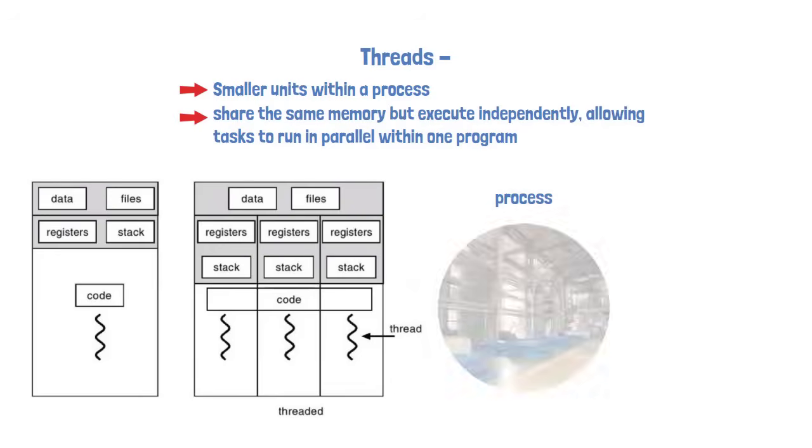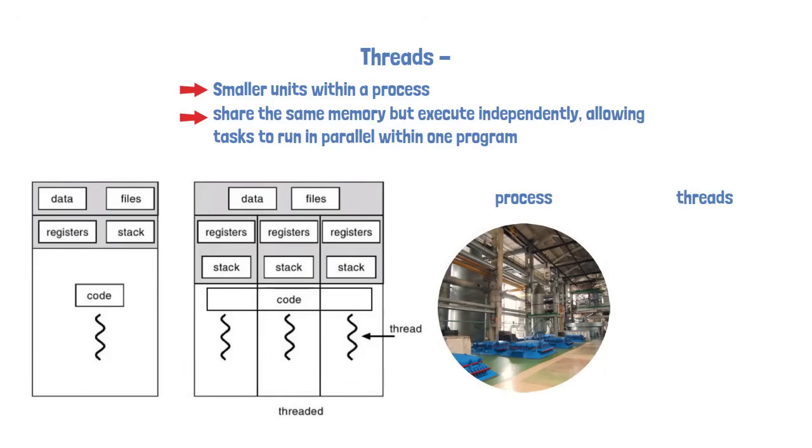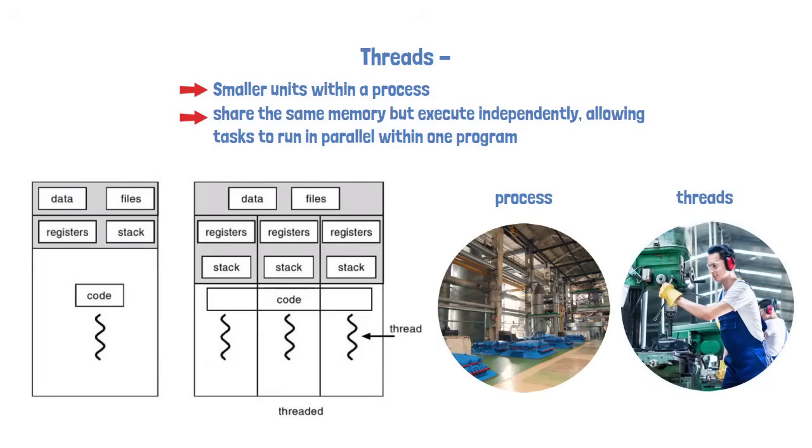If a process is like a factory, threads are like workers in that factory. They all work in the same building, shared memory, but each can perform different tasks simultaneously while accessing the same tools and materials.